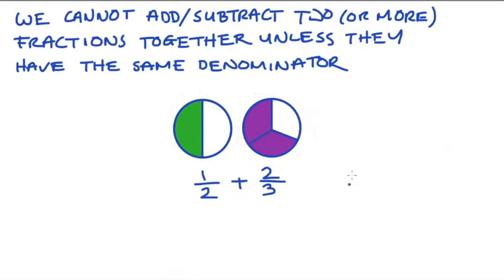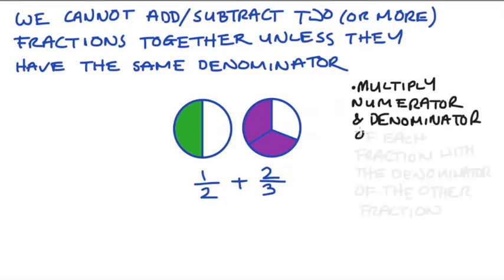There are a number of ways that we can approach this problem, so that we can add these two fractions up, despite the fact that they have different denominators. In my example in this video, my approach is going to be to multiply both the numerator and the denominator of each fraction with the denominator of the other fraction.